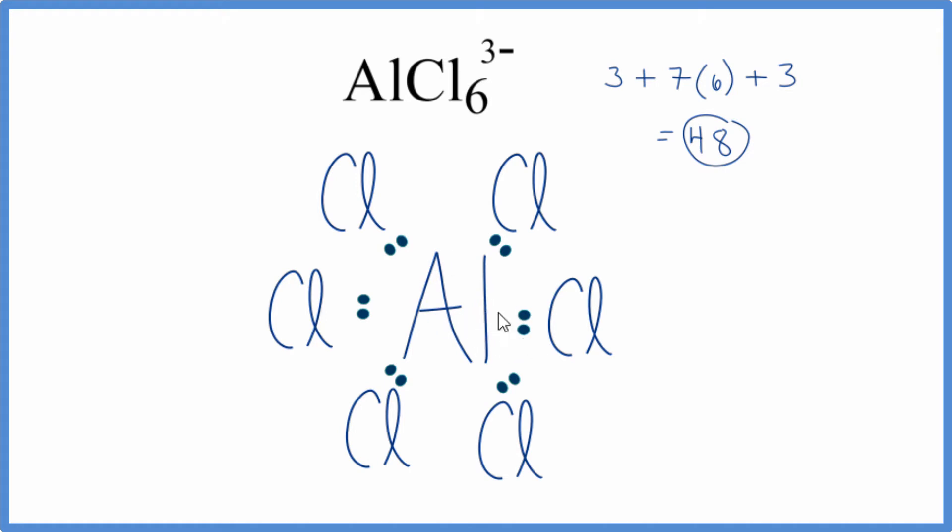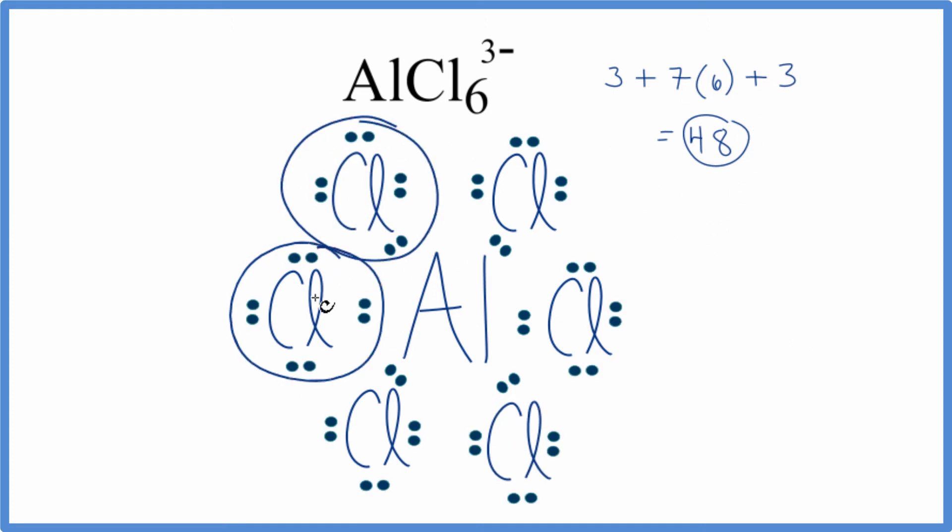In aluminum, it can violate the octet rule. So we're okay with having those 12 electrons there. Once we've done that, we're going to complete the octets on each of these chlorine atoms. So at this point, we've used all 48 valence electrons, and each chlorine atom has an octet.